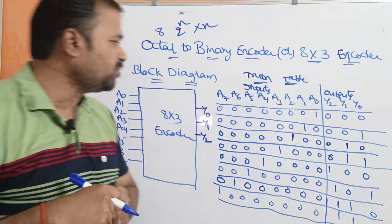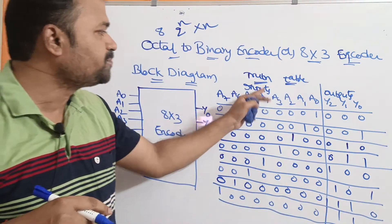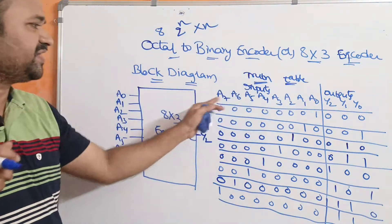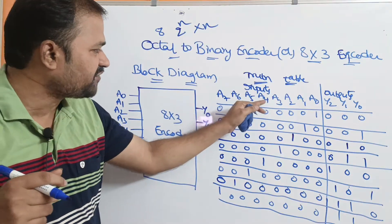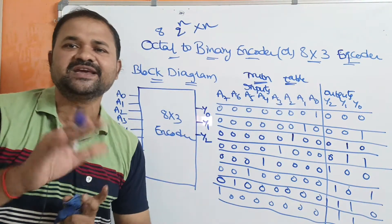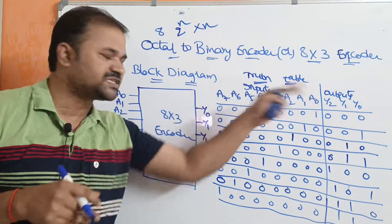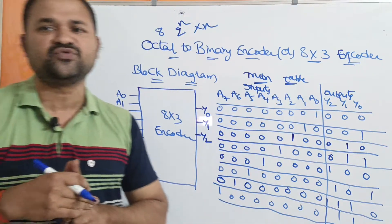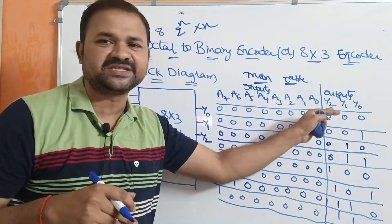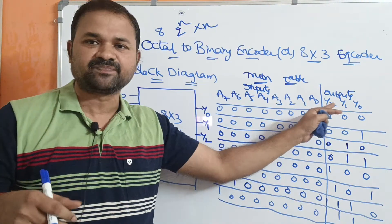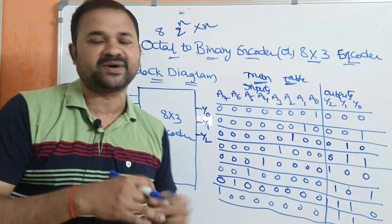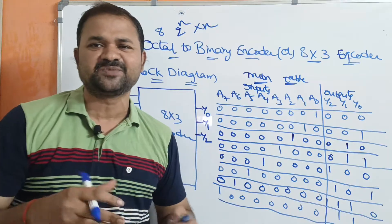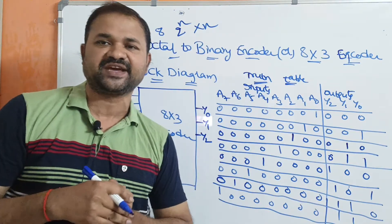Now let us see the truth table. We have two columns: inputs and outputs. The inputs are from a0 to a7 — written as a7, a6, a5, a4, a3, a2, a1, a0. We can write them in any order. The outputs are y2, y1, y0, where y2 is the MSB (higher number) and y0 is the LSB (lower number).